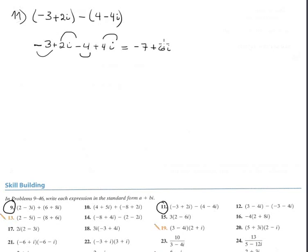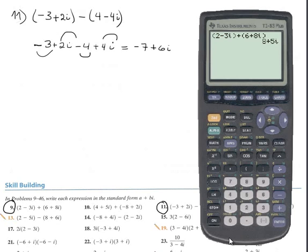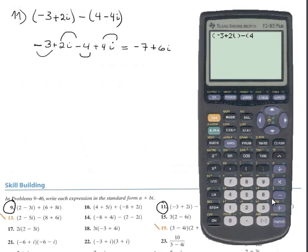Let me check it with the calculator. In the calculator, you put parenthesis, then minus 3 — of course this minus is a negative value, not subtraction — plus 2i. This is subtraction: parenthesis (4 minus 4i). The result is minus 7 plus 6i. Perfect.